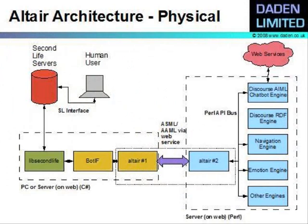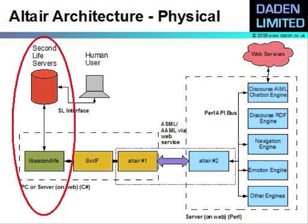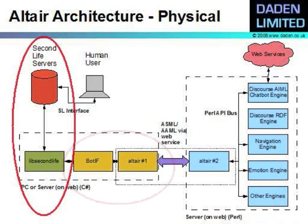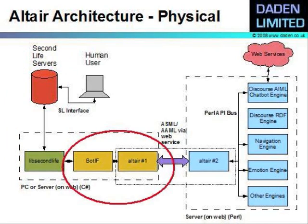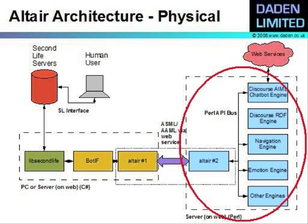Our AI architecture is called Altair and it's a fairly distributed architecture with three main components. First, we control our avatar in Second Life using the normal LibSecondLife C-sharp library and .NET. Running on the same PC is a bot interface which converts LibSecondLife to our standard avatar sensing and avatar action markup languages, and the first element of the Altair AI code which performs lower-level brain functions like navigation, movement, and low-road emotional processing. Finally, running on a web server and accessible through web services, we have the main chatbot engine and the rest of the AI engine, which can also access web services and dedicated modules to handle navigation and emotion.